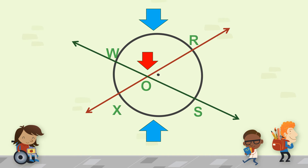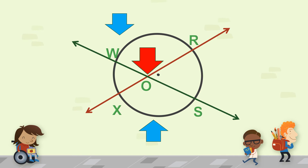For example, if you're looking for the measure of angle WOR, take the arc behind angle WOR and the arc in front — arc XS — add them together, then divide by two.